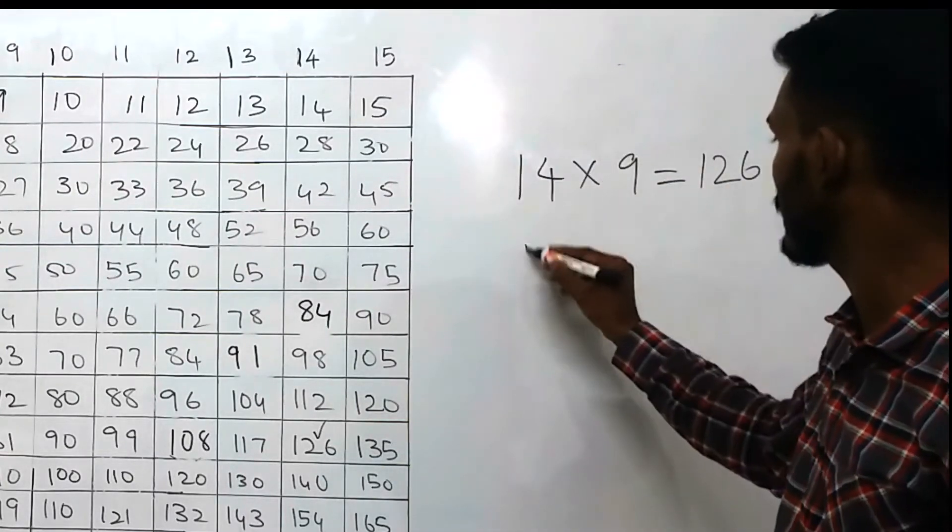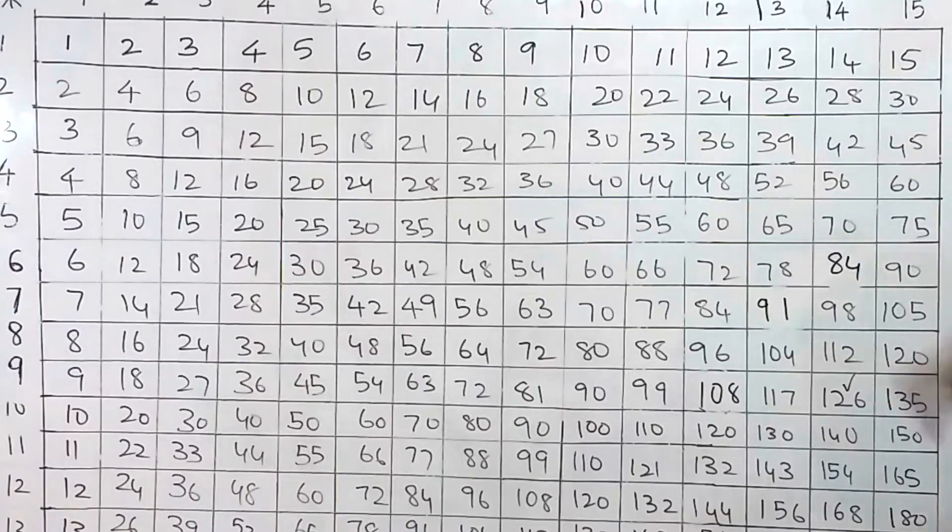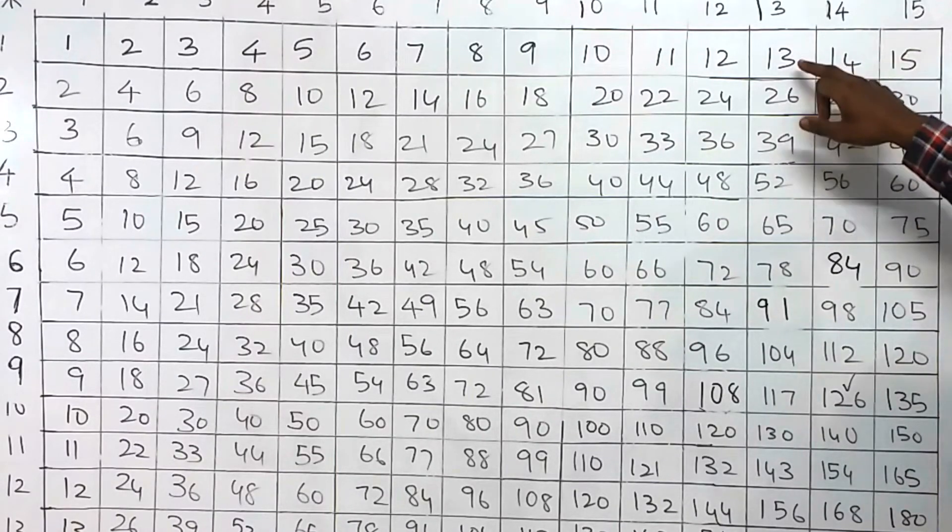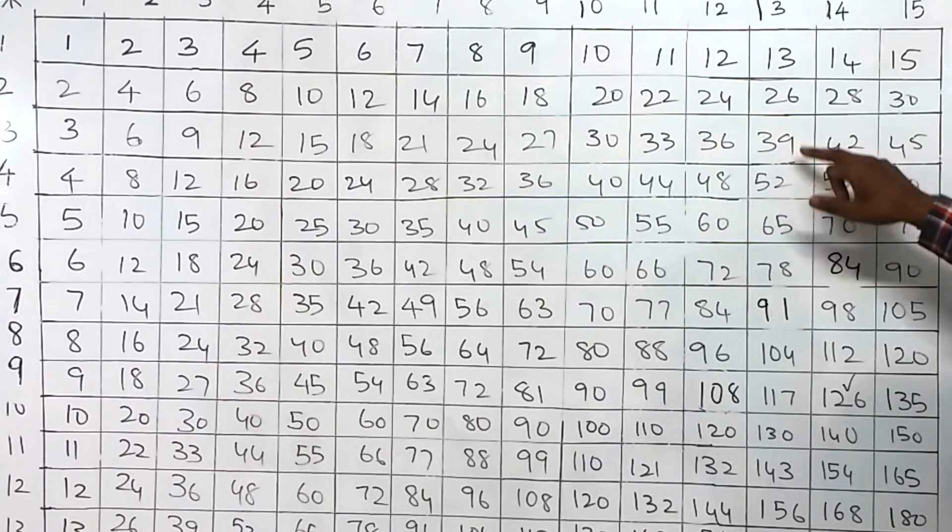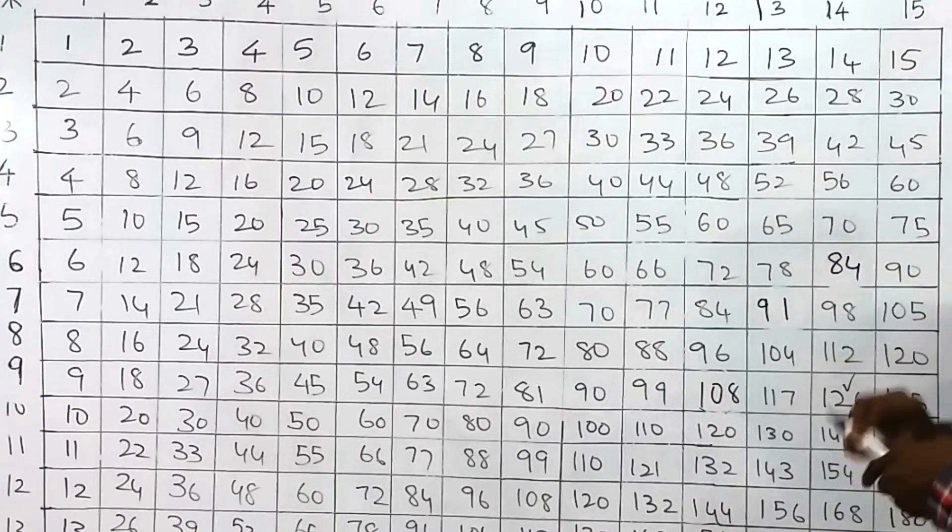Similarly, for another table, 13 into 6. What is 13 into 6? From 13, we have to add 6 places: 1, 2, 3, 4, 5, and 6. That is 78.